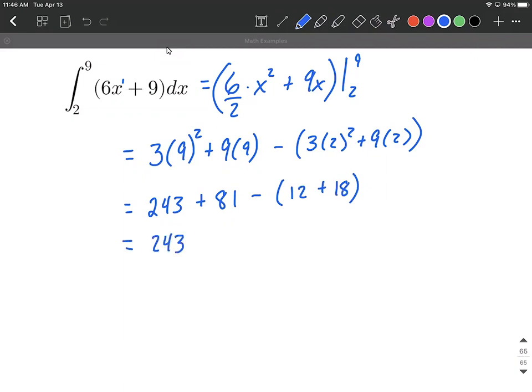So 243 plus 81 minus 30. I can drop my parentheses now that I've combined the 12 and the 18 together, or you could have distributed that negative from the outside. Either way would get you to the right place.